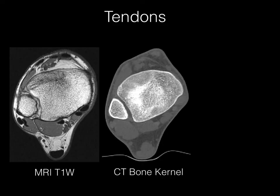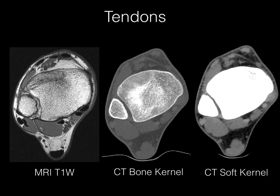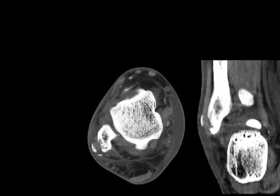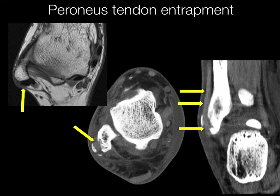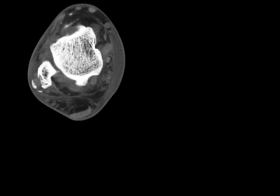Soft tissues are also visible on CT scans of the foot and ankle and are easy to overlook when describing fractures. An MR is used for reference. Using the bone or standard kernel algorithm, all soft tissues look similar, but when you use the soft tissue kernel algorithm, you can identify the tendons fairly easily. Here's an example of a fibula fracture where the peroneus tendon is entrapped within the fracture — an example of tendon entrapment visible on CT.